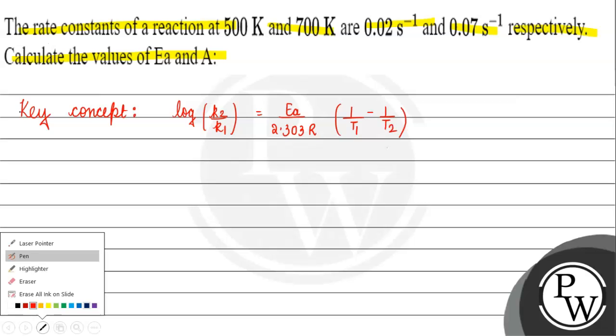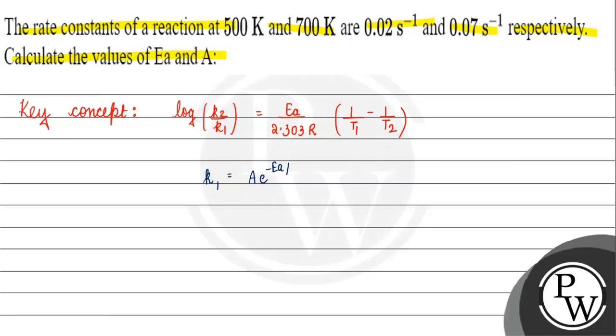This relation has come because we have the Arrhenius equation. K1 equals A e to power minus Ea by RT1, right? If we write ln K1 equals ln A minus Ea by RT1. And if we can write this reaction like this, ln K2 equals ln A minus Ea by RT2.